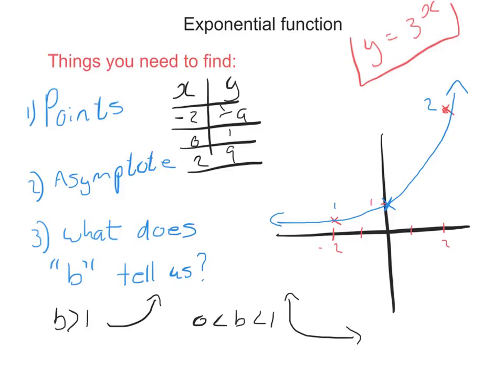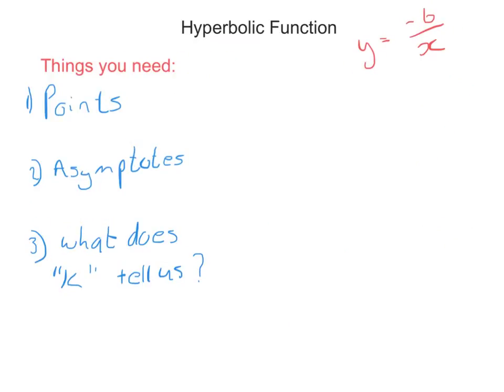The last function we're going to deal with is a hyperbolic function. And so, very similar to an exponential function, the only difference is here we have two asymptotes: the x-axis and the y-axis. So, the y-axis is one of my asymptotes and the x-axis is my other one. Then we have a look at what does k tell us. So, k is this value at the top, my numerator. And it says that the bigger k, if k is positive, if k is bigger than 0, then it's going to be in quadrants 1 and 3. And if k is negative, then it will be in quadrants 2 and 4. That, we don't need to know much else than that.